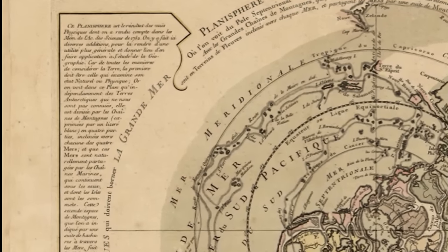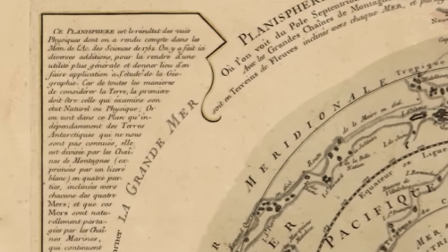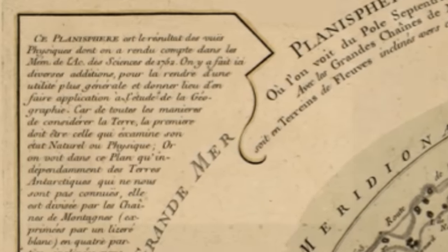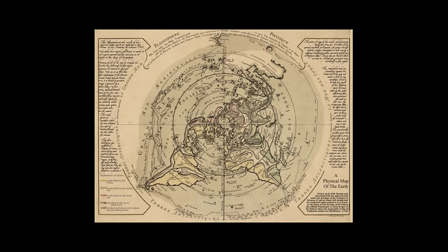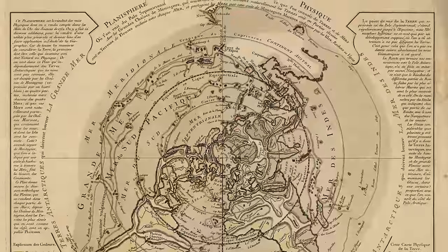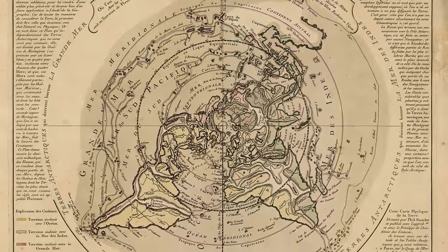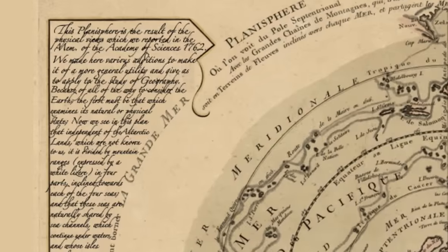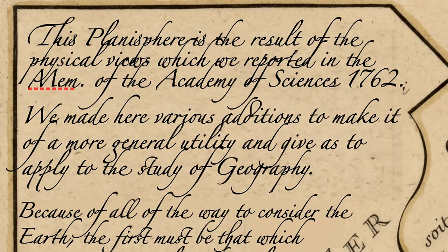This map is originally written in French, so I've taken all the text, translated it, and rebuilt the map with the text on the side in English, so that I can post this actual map and people can read it for themselves. Without any further ado, let's begin. This planisphere is the result of the physical views which we reported in the memoirs of the Academy of Sciences, 1762. We made here various additions to make it of a more general utility.